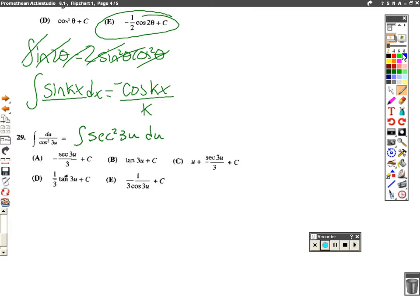What's going on here is that u, or let's call it w again, is 3u. So, dw is 3du. And du is just dw over 3.